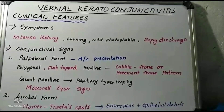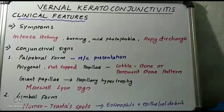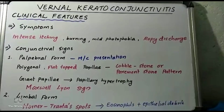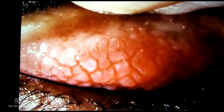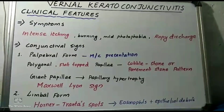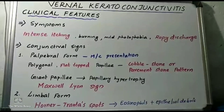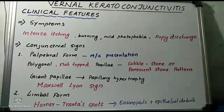The most common conjunctival presentation is the palpebral form. It features polygonal flat-topped papillae arranged in a characteristic cobblestone or pavement stone pattern, more commonly seen in the upper tarsal conjunctiva. In severe cases, papillary hypertrophy can lead to the formation of giant papillae. The Maxwell-Lyon sign refers to the formation of mucous flakes in between the papillae due to the ropy discharge.